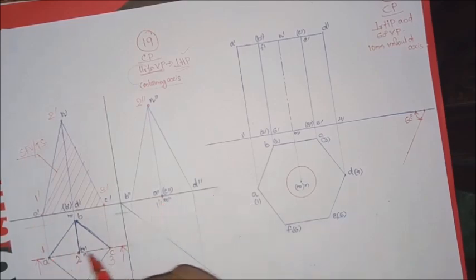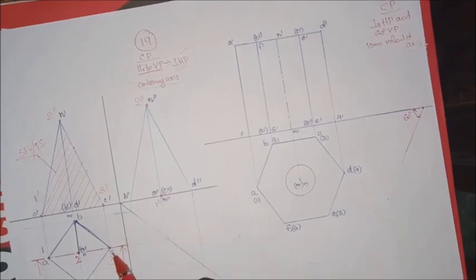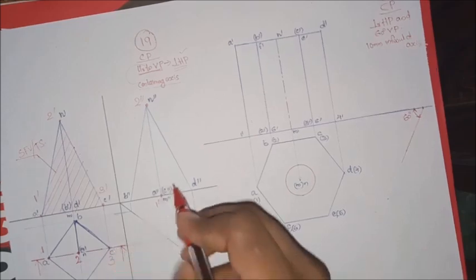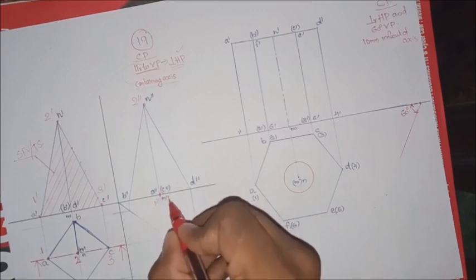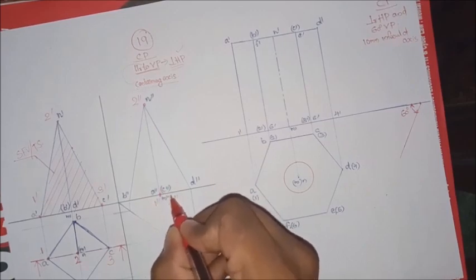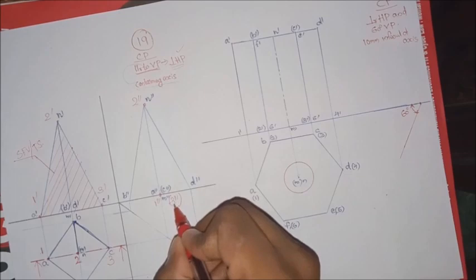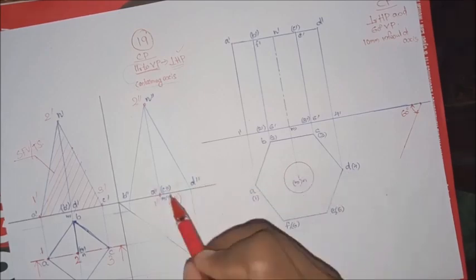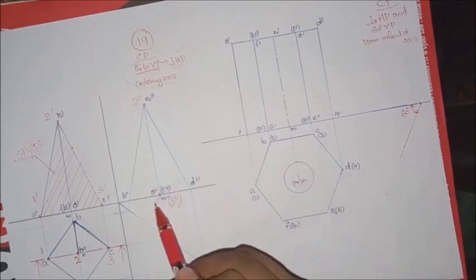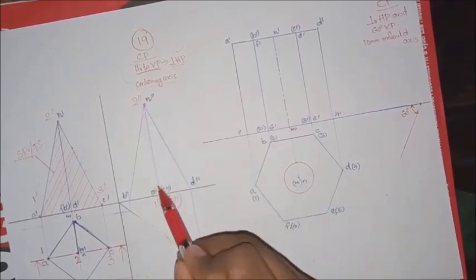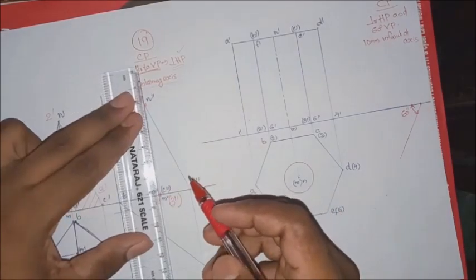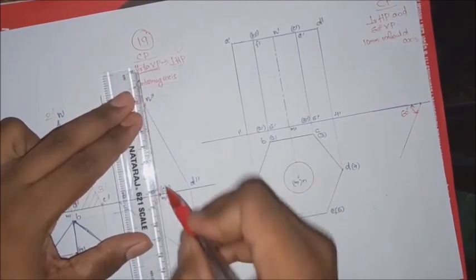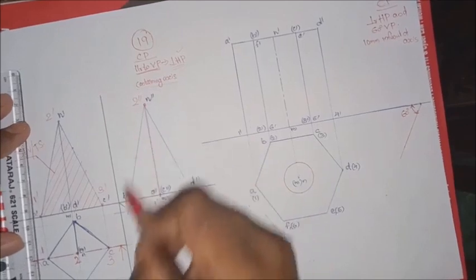You can use this triangle. Connect points 1, 2, 3 using this triangle over there. That means you have the two sides.